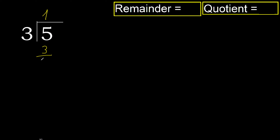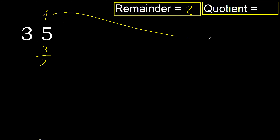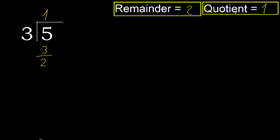Subtract: 5 minus 3 is 2. Next, that is not a number, therefore finish it. The answer is 1, ok.